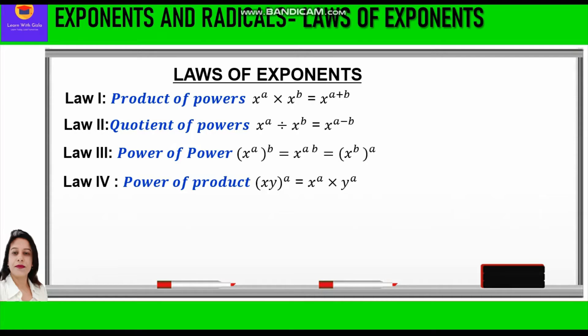Further, the fourth law is Power of Product, which says x into y whole raised to power a is equal to x raised to power a into y raised to power a. The fifth law is Power of Quotient — whenever we have two variables divided with each other